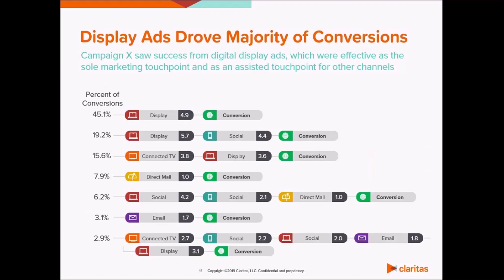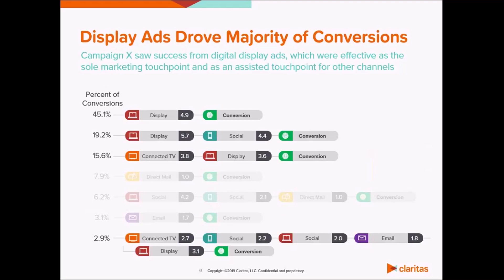Let's shift from campaign delivery over to campaign performance. Consumers can experience any combination of marketing touchpoints along their path to a conversion. Some channels are effective at directly driving conversions while others work better in combination. It's apparent from this slide that display ads are an important part of this campaign — not only do they directly influence 45.1% of attributable conversions, but they assist in three more conversion paths, accounting for an additional 38% of conversions. Maybe less apparent is the impact of connected TV ads. If we were to only look at last-touch attribution, we wouldn't see much influence from this channel.